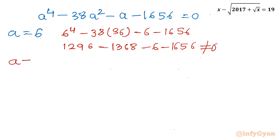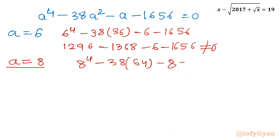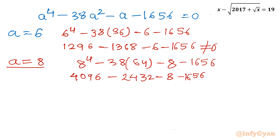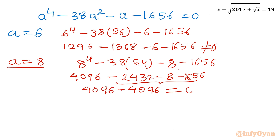Now I will take the next value, which is 8. Checking: 8 to the power 4 is 4096, minus 38 times 64 which is 2432, minus 8, minus 1656. Adding all three negative numbers gives 4096, and 4096 minus 4096 equals 0. That means a equal to 8 is our base solution for this quartic equation.